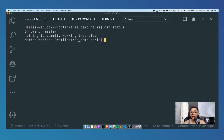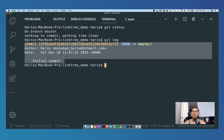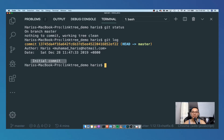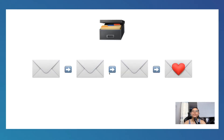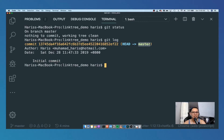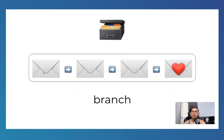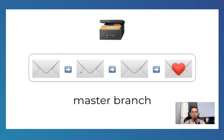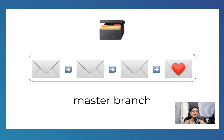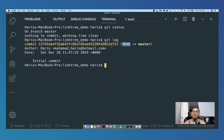If you type git status, it will show nothing to commit, meaning we have saved our first version of the linktree demo project. To see different versions, type git log - this shows all the different commits. You can see the message "initial commit" here. The asterisk represents the HEAD, which is the latest version of our project. The default branch Git creates is called the master branch - this is just a naming convention Git initializes for us.